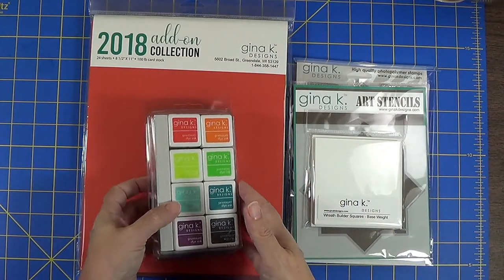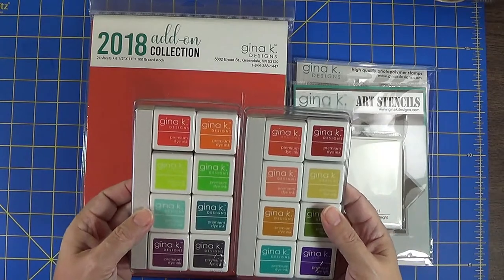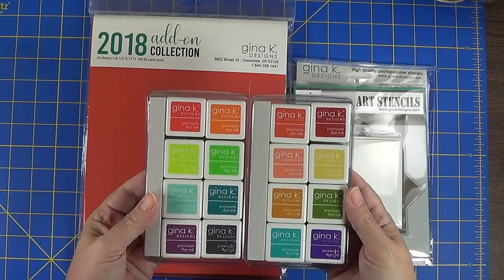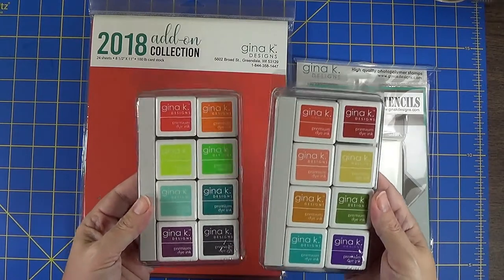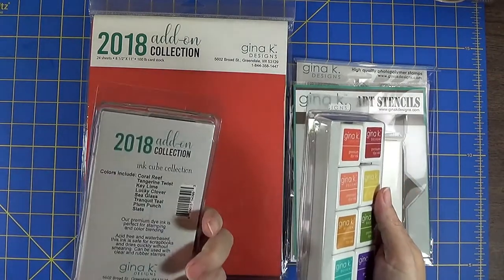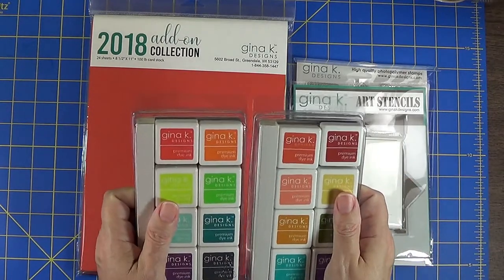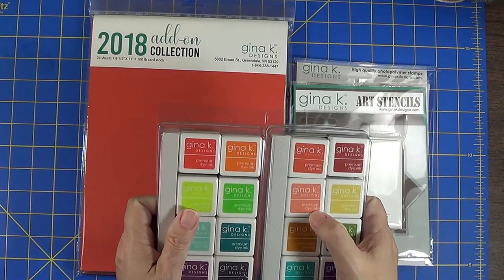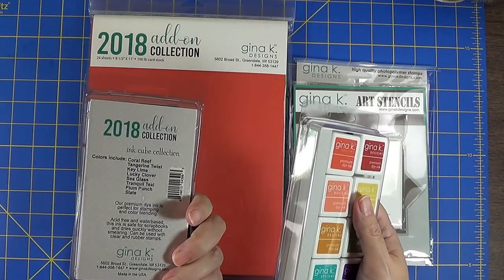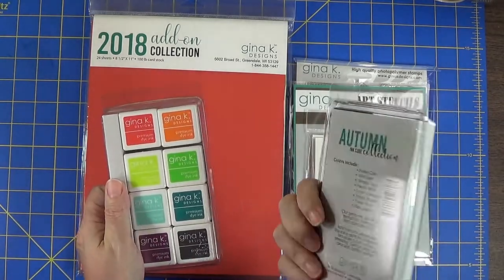So first of all I ordered ink. I ordered two sets of ink cubes because everybody knows they're more economical and you can try lots of colors, and I kept myself to two sets which is still a bunch but there are eight cubes, one inch cubes in each collection and they are dye ink. I've got the 2018 add-on collection and the autumn ink cube collection.